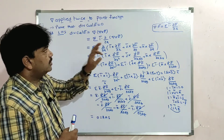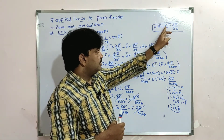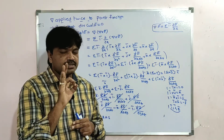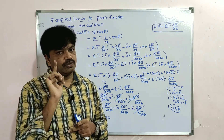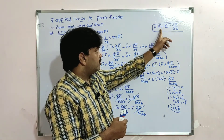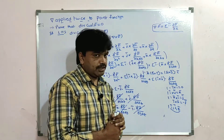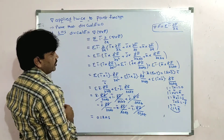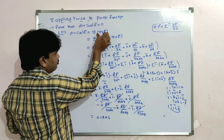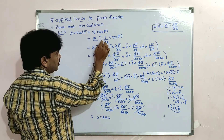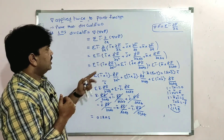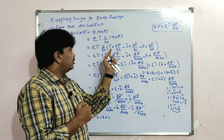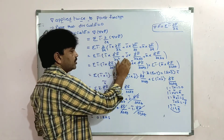To recap: del dot F̄ can be written as sigma i̅ dot (∂F̄/∂x) — you can watch the divergence concept video. Given div(curl F̄), that is del dot (del cross F̄). Treating del cross F̄ as F̄, we write sigma i̅ dot (∂/∂x)(del cross F̄), then expand del cross F̄ using its formula, and differentiate with respect to x.